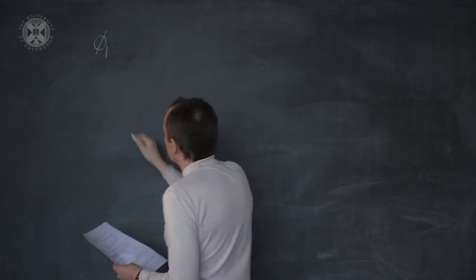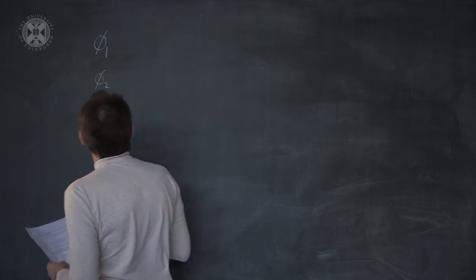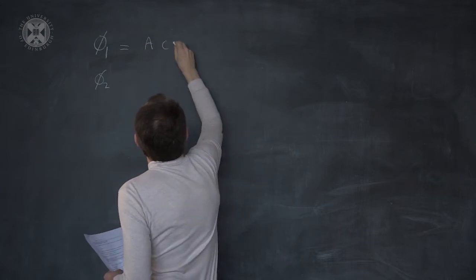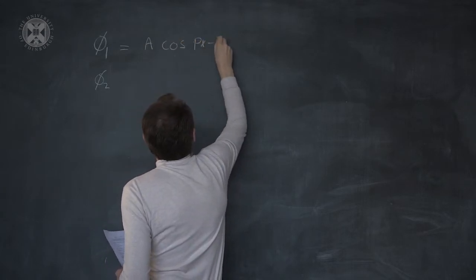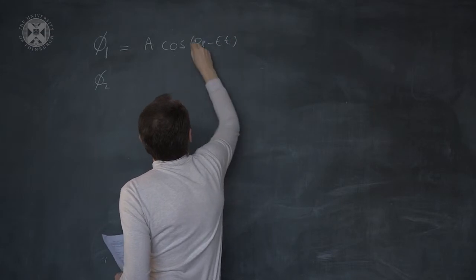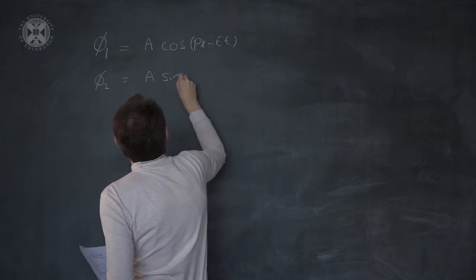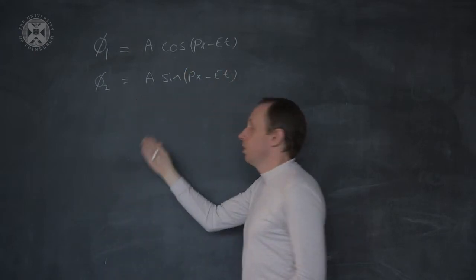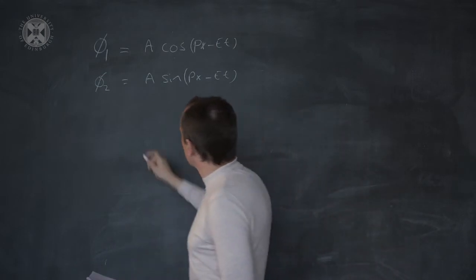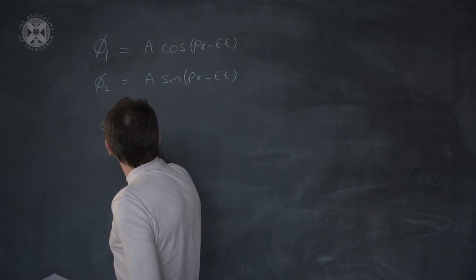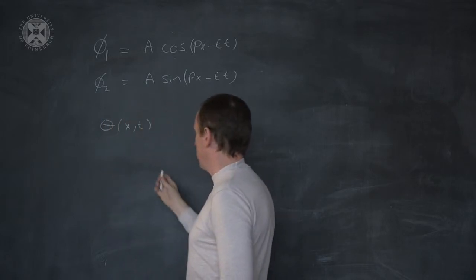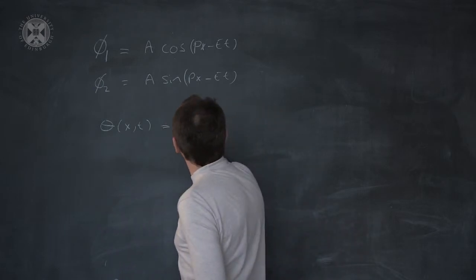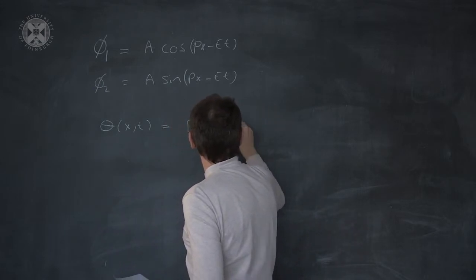So we have our phi-1 and phi-2 components, which are waves. In other words, oscillations. The phase angle theta of this around the phi-1 and phi-2 plane is a function of space and time, px minus pt.